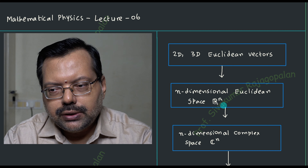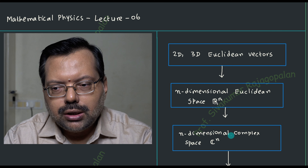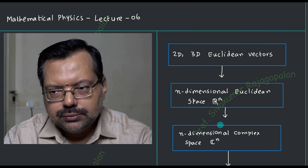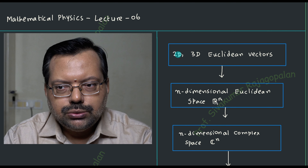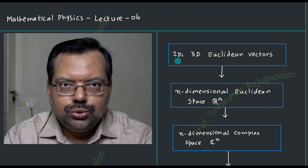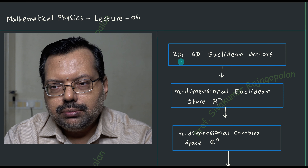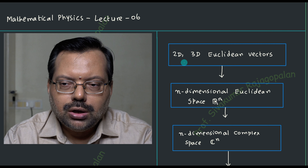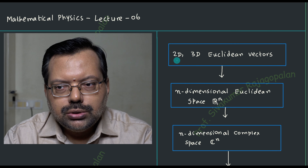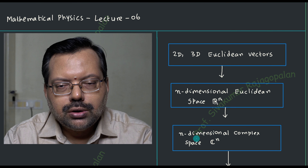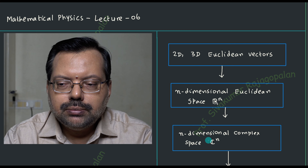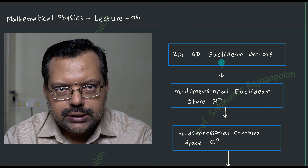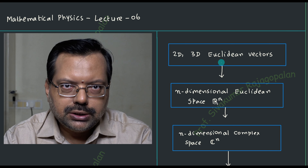The further step towards the complex vector space is that you are going to admit complex values for every one of the components. In the case of the two-dimensional system, you have something like 2 times x-cap plus 3 times y-cap. Instead of 2 and 3, we will allow complex values — then this will become a complex vector space. So these are the ways in which we extend our understanding towards the complex vector space.